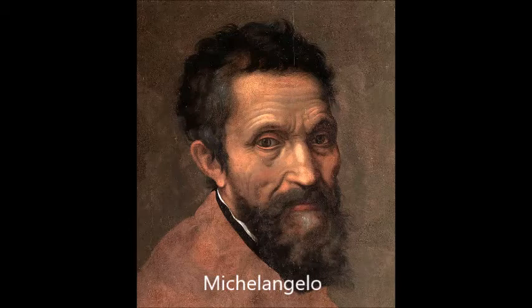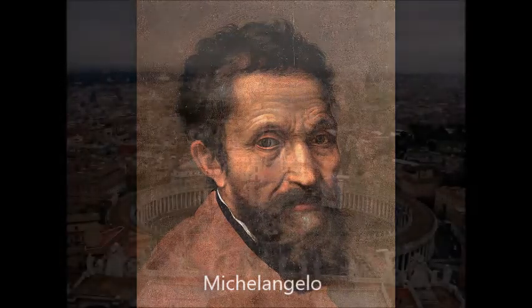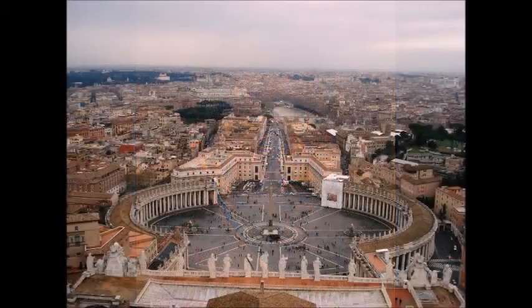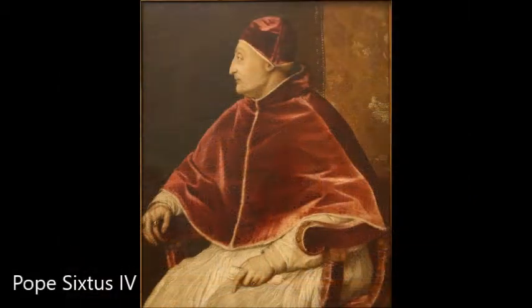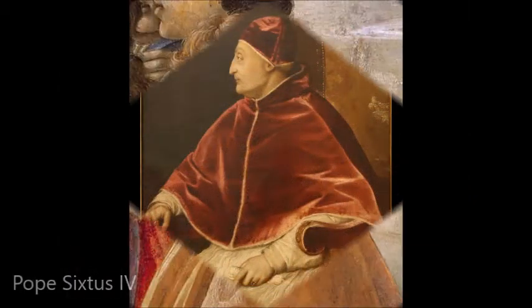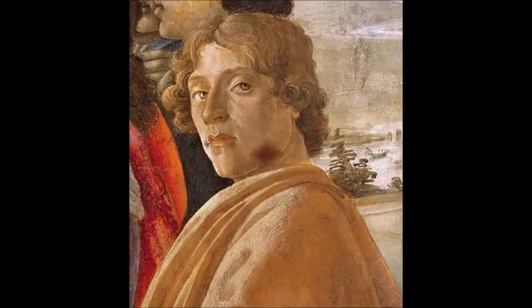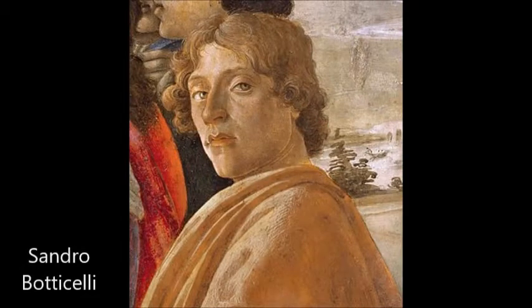But first, a little bit of context. The Sistine Chapel is located within the Vatican Palace in Vatican City, Rome. It was built for Pope Sixtus IV in the 1470s, but it took decades for it to be decorated and completed. Many artists worked on this chapel, including Sandro Botticelli and Pietro Perugino.